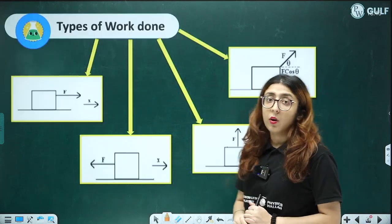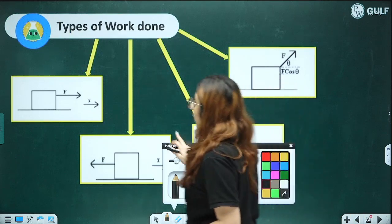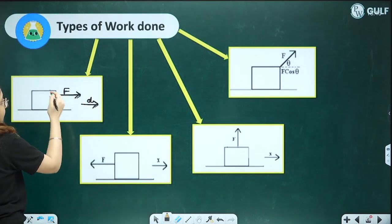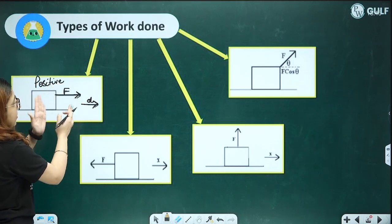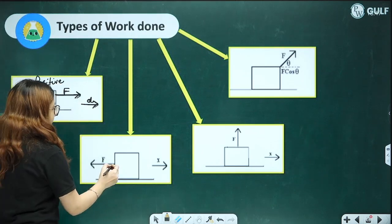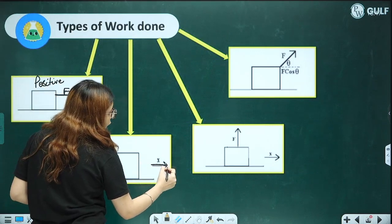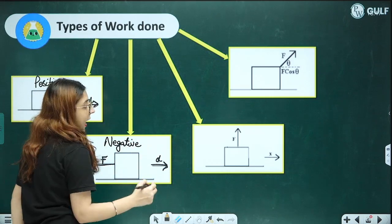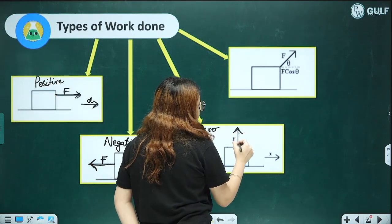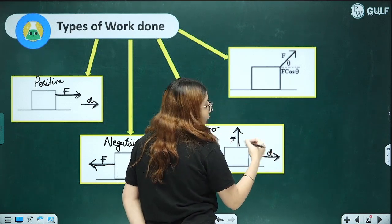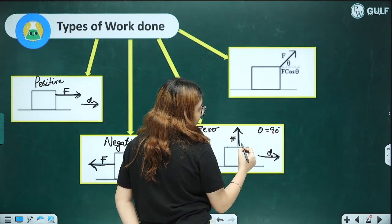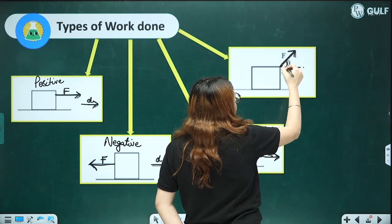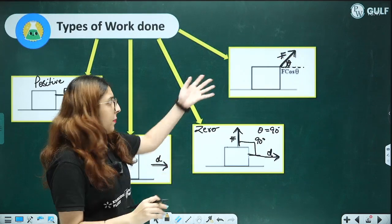Now let us look at the types of work done — there are four types. First, positive work done: where the direction of force and the displacement of the body are the same. Second, negative work done: force and displacement are in opposite directions. Third, zero work done: force is at 90 degrees to the displacement. Fourth, the general case: force acts at a particular angle.